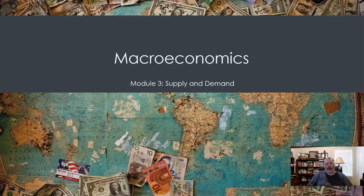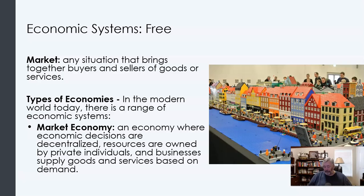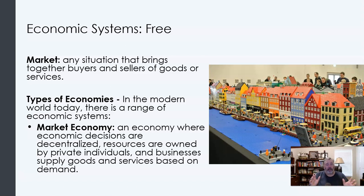Before we get into actual supply and demand information, let's talk a little bit about markets. A market is a place where consumers and producers come together to buy and sell goods and services at a negotiated price. You may not think you're negotiating the prices you buy things at, but the negotiation really occurs in the context of a market with supply and demand, as we will see.